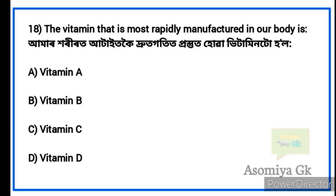Next question: Which vitamin is most rapidly manufactured in our body? Option D: Vitamin D.